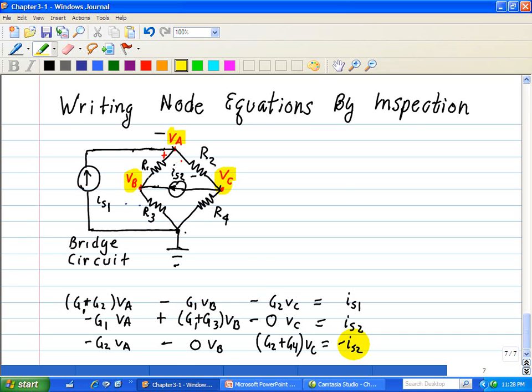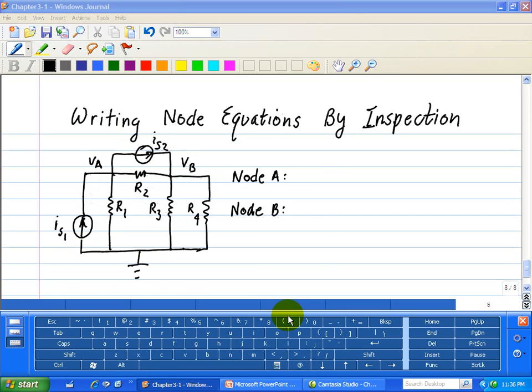We'll do another example. Here's another example on how we can write node equations by inspection. So here I labeled my node voltage A here, and my node voltage B here. So let's do node voltage A.